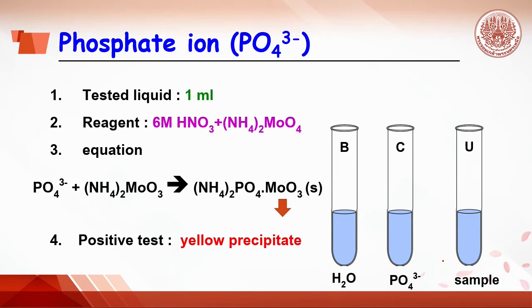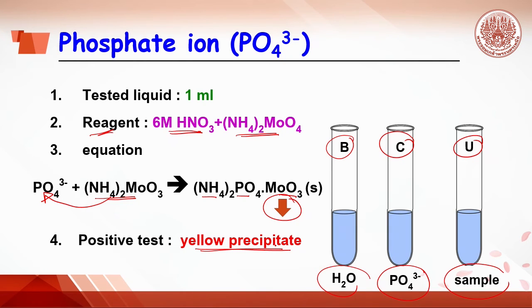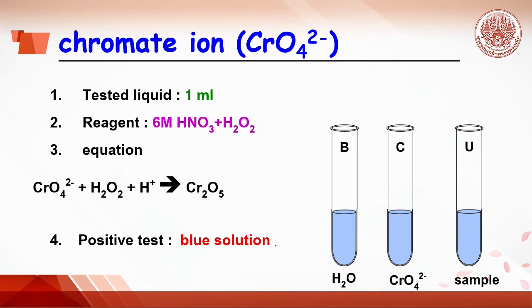In the case of phosphate ion testing, do the same by adding water, phosphate ion and sample in the B tube, C tube and U tube. Then add the reagent by adding nitric acid, followed by ammonium molybdate. Once ammonium molybdate is added, it will react with phosphate ion to get the precipitate of ammonium phosphomolybdate, which is yellow precipitate. In the C tube, we will see yellow precipitate. If in the C tube it cannot be seen, dip the tube into the hot bath.